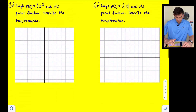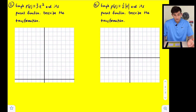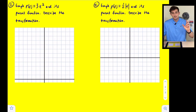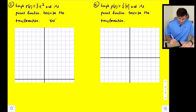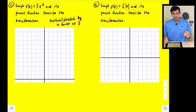For number three, graph r(x) equals three x squared and its parent function, and describe the transformation. We see x squared, so this is a quadratic function. The three here means we are multiplying, so this is going to be a vertical stretch or shrink. Since that value three is greater than one, this is a vertical stretch by a factor of three. We'll plot the parent function parabola first so we can see how the r(x) function is being transformed.